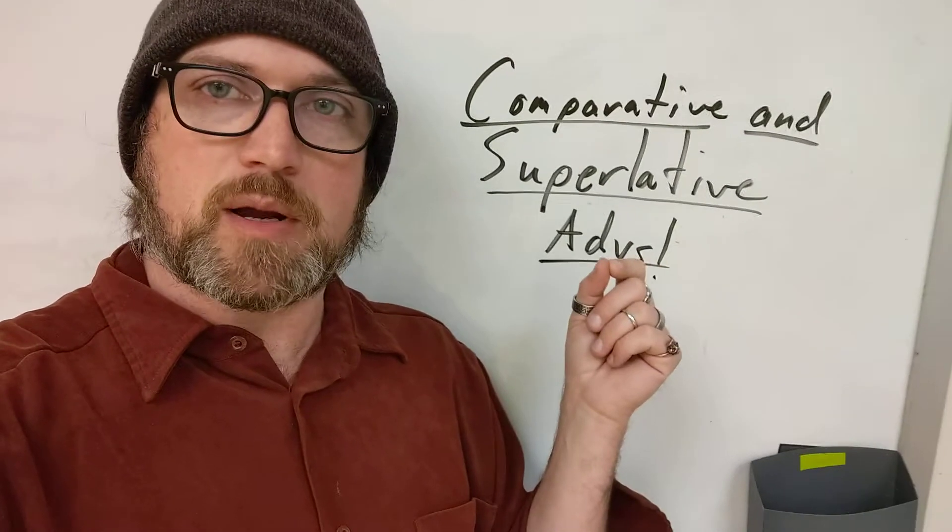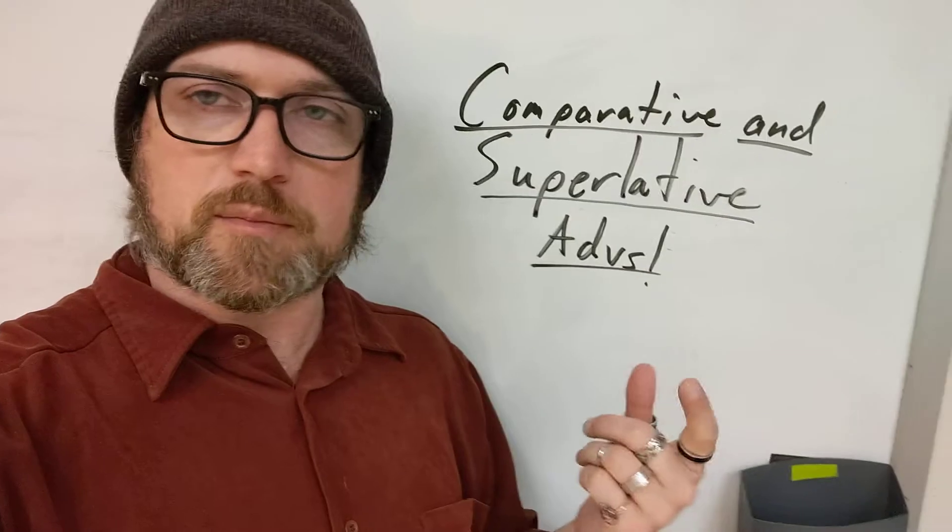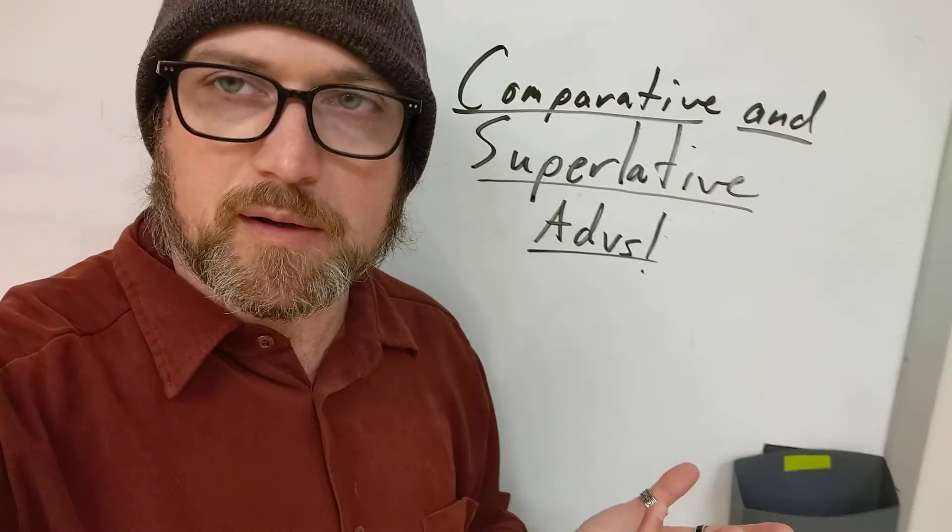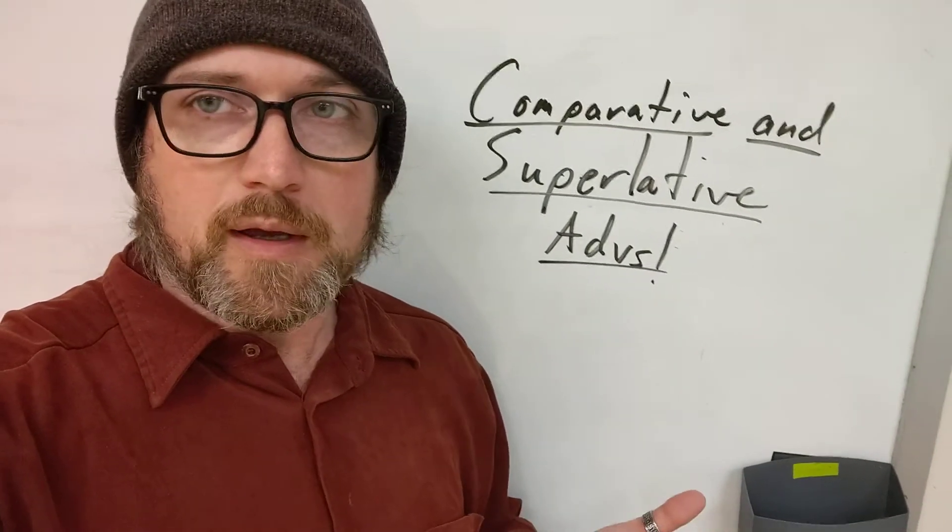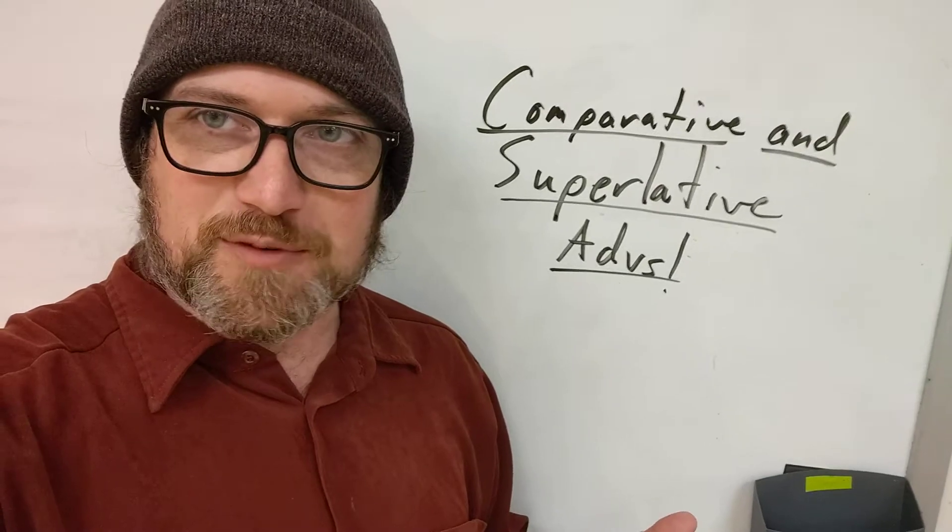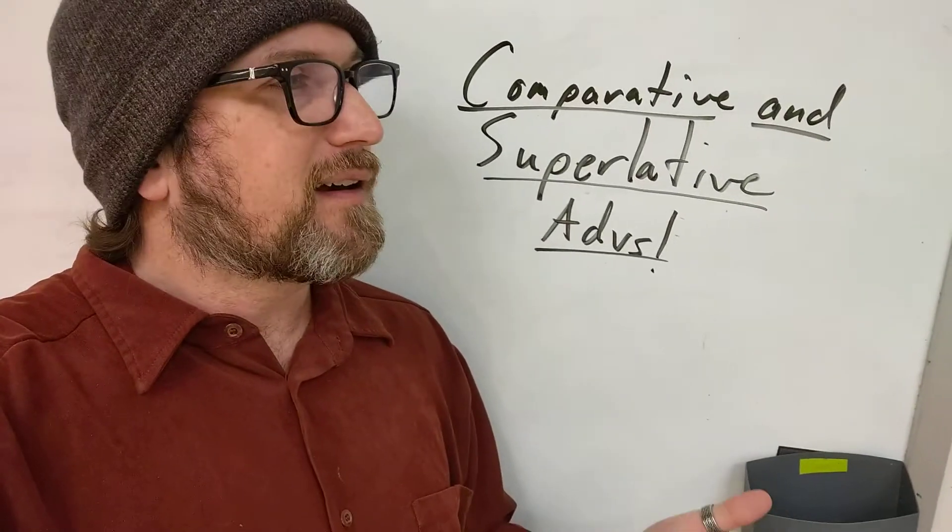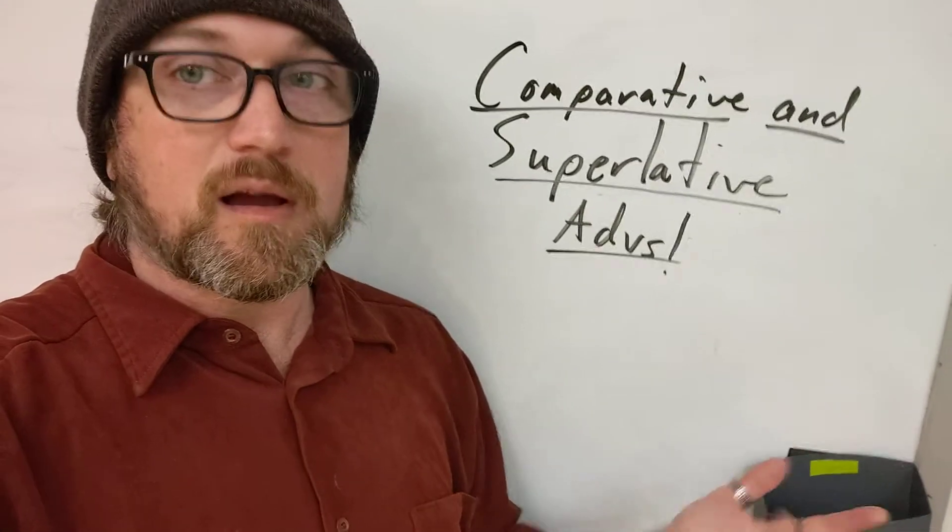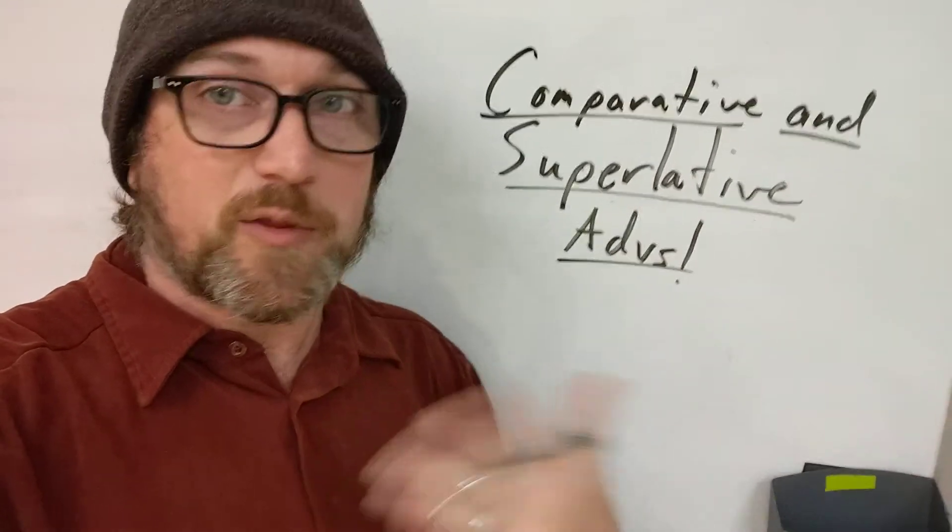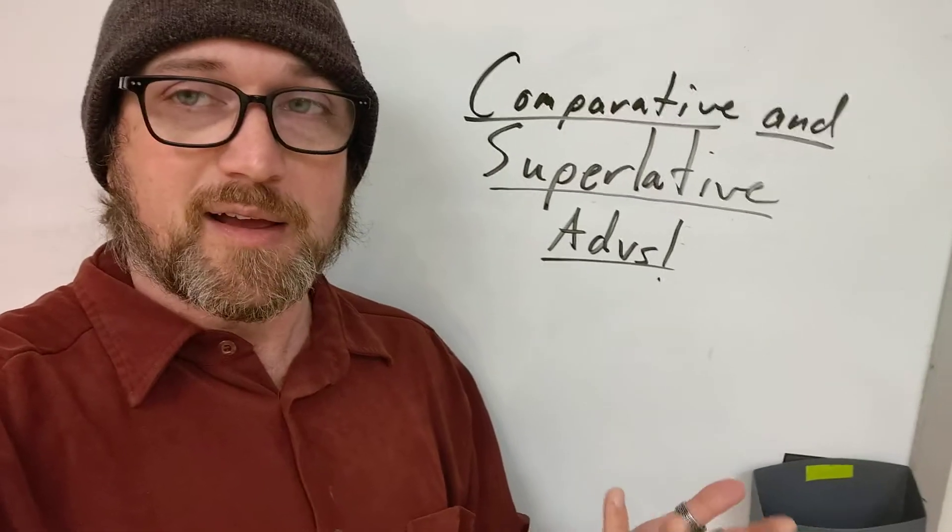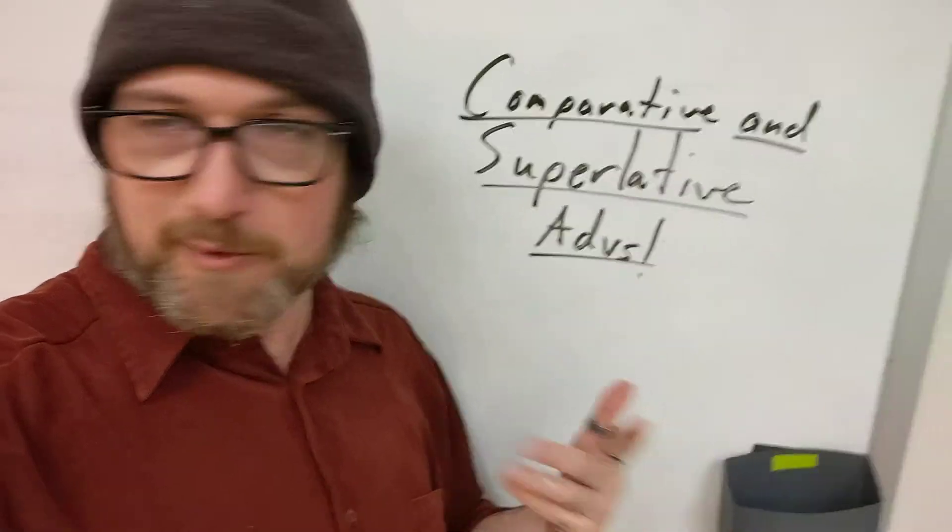Now I am gonna combine comparatives and superlatives for adverbs for a couple of reasons. One is we already know the basics of how these work, and two, there's not declension tables, right? Adverbs don't decline, they don't conjugate. In fact, they don't change at all unless you're making them comparative and superlative. Otherwise, they actually don't change at all, which is why we don't parse them. They don't have person, they don't have case, they don't have number, or any of that business.